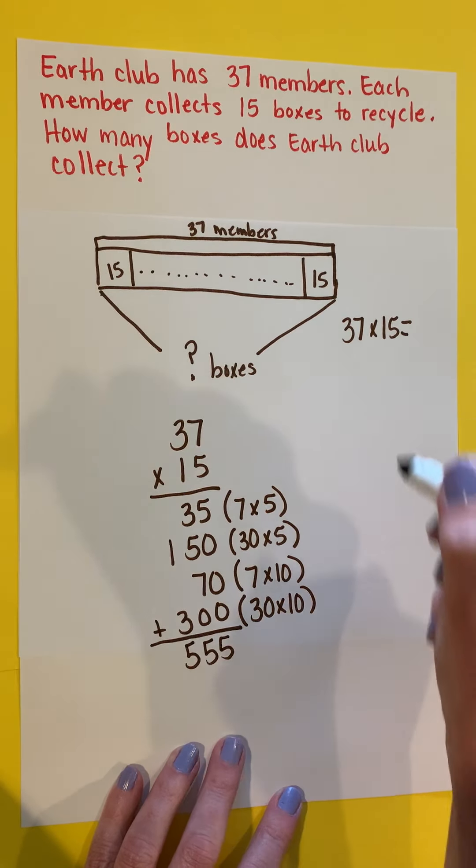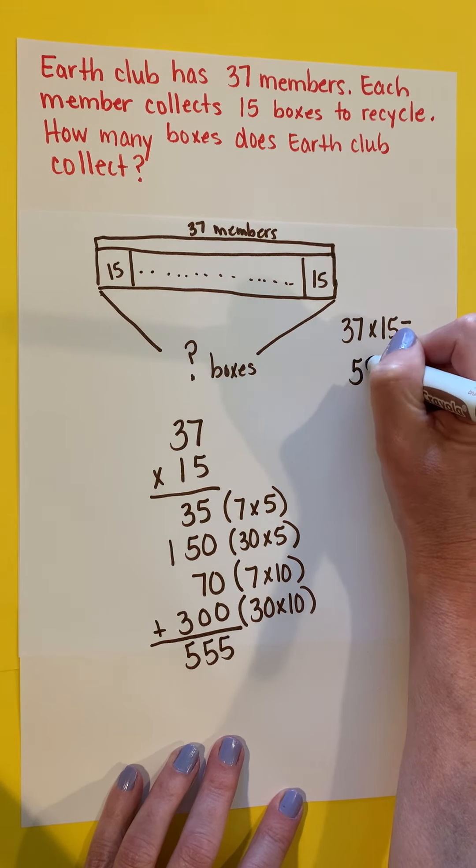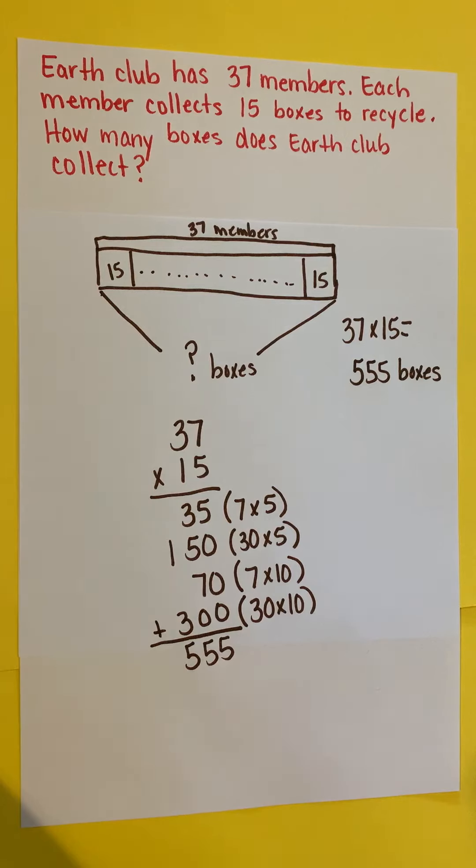So I know that 35 multiplied by 15 equals 555. And we were trying to find how many boxes. So 555 boxes.